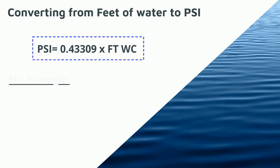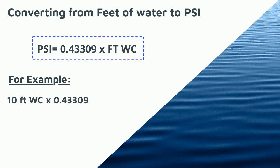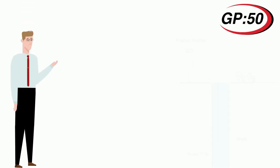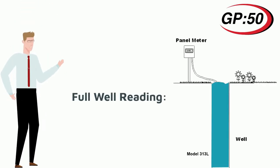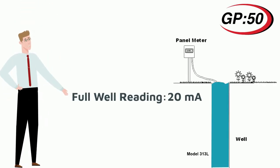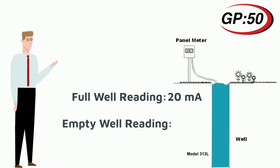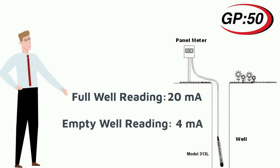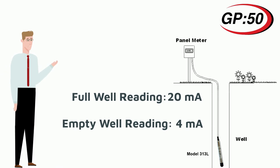For example, 10 feet of water column times 0.433 equals 4.33 psi. The level transmitter would have a calibrated range of 0 to 4.33 psi. When the well is full the unit reads 20 milliamps, and when the well is empty it reads at 4 milliamps, providing a linear reading at all the different depths of the water in the tank.